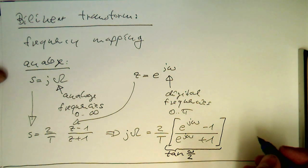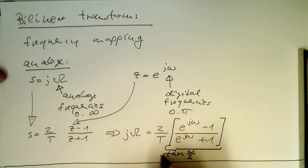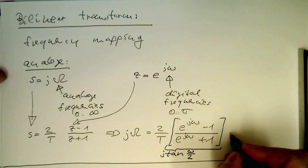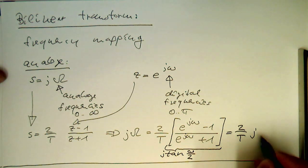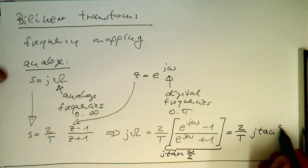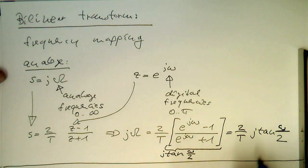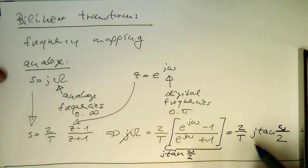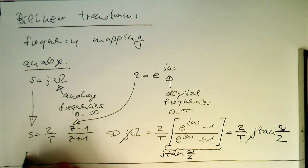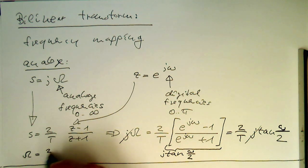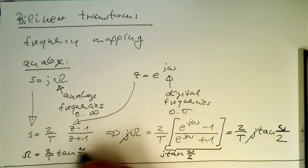And so we can write j tangent omega half. And so this gives us 2 divided by t and then j tangent omega half. And then obviously our j cancels out here. So therefore our final formula then is capital omega equals 2 divided by t and then tangent omega half.